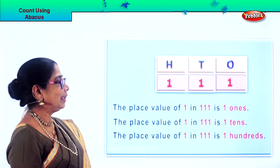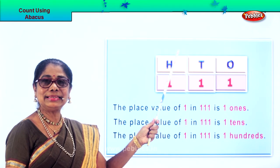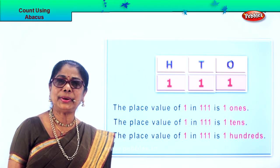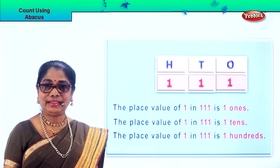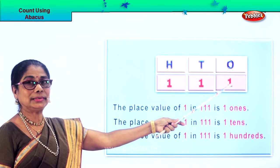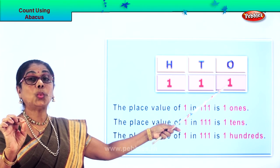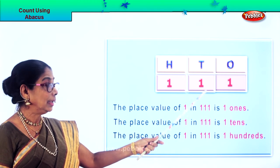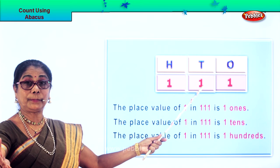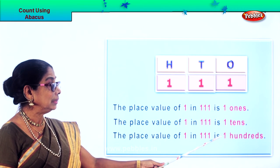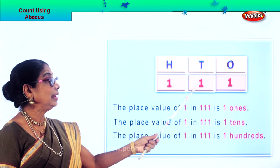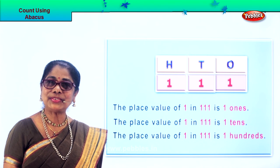Let's take another sum now. Ones, tens, hundreds: one in the ones place, one in the tens place, one in the hundreds place. The number is one hundred and eleven. The place value of the ones digit in one hundred and eleven is one one — placed in the ones place. The place value of the tens one is one ten — because this one is placed in the tens. The place value of the hundreds one in one hundred and eleven is one hundred — because this one is placed in the hundreds. 111. Did you enjoy learning place value? Good.